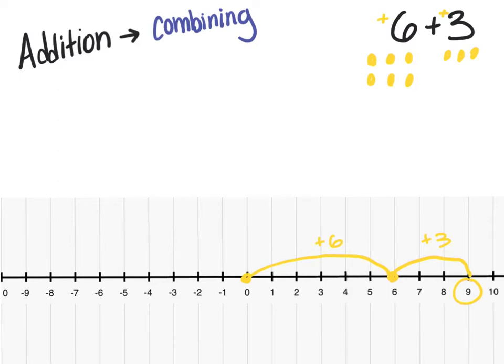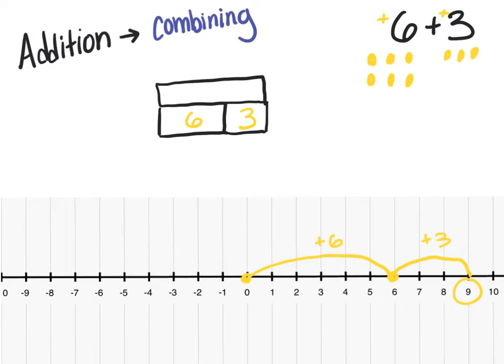Another way to show this is with the group model — like bar models. I might have one bar worth 6, then add another bar worth 3. All together, that total at the top is 9, so if I had some cubes, I could stack those together. This is fairly easy to see when we have all positive numbers, and all three of these representations build on the idea that addition means to combine.